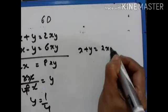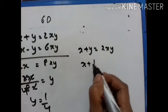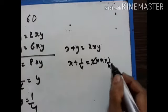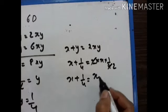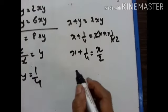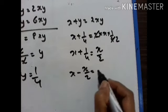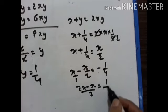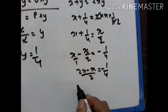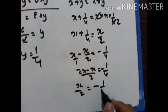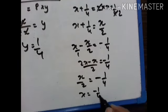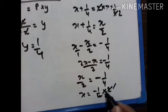Substituting y equals 1 upon 4 into x plus y equals 2xy: x plus 1 upon 4 is equal to 2 times x times 1 upon 4, which gives x plus 1 upon 4 equals x upon 2. So x minus x upon 2 equals minus 1 upon 4, giving x upon 2 equals minus 1 upon 4, therefore x equals minus 1 upon 2.